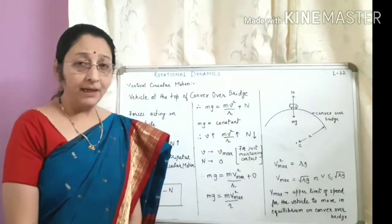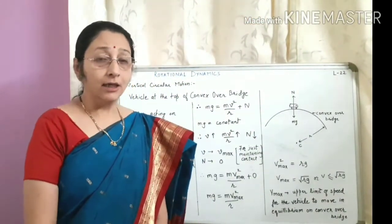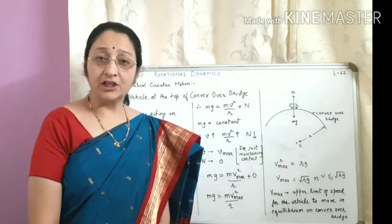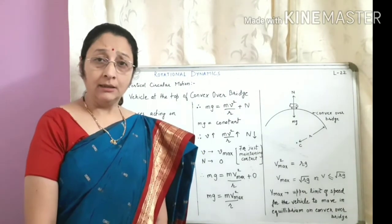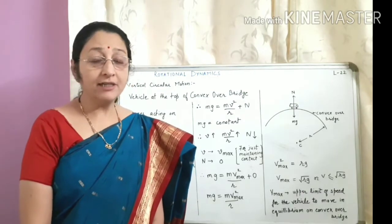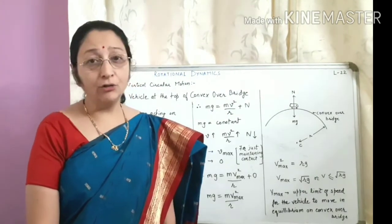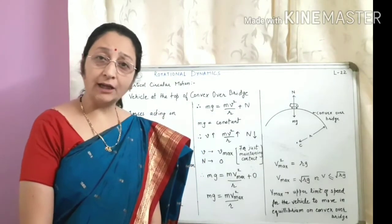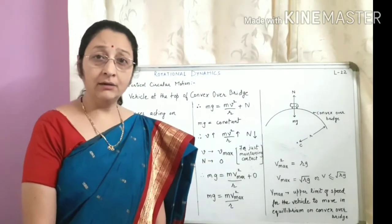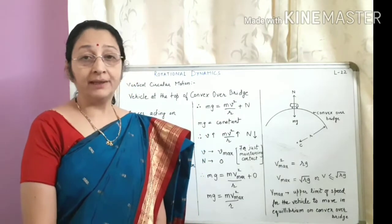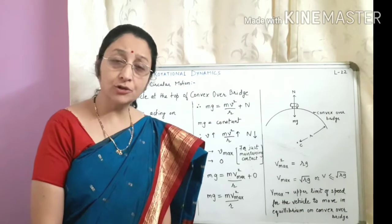Hello friends. Up till now we were discussing the circular motion part of the chapter rotational dynamics. In circular motion we have discussed the characteristics of circular motion: angular displacement, angular velocity, angular acceleration, and the directions given by the right hand rule.